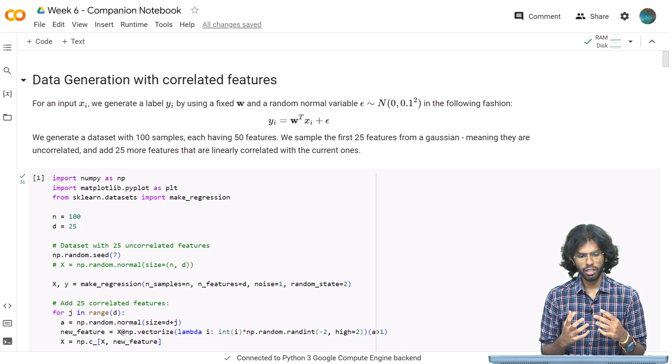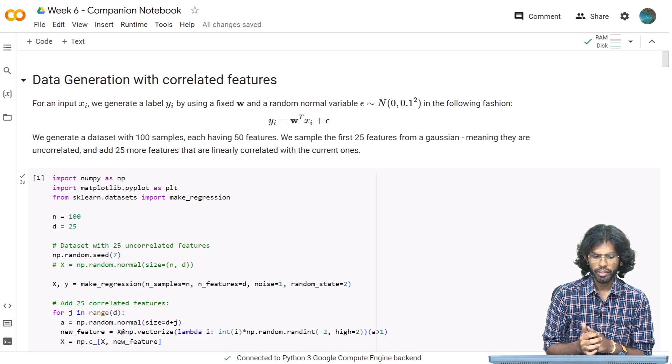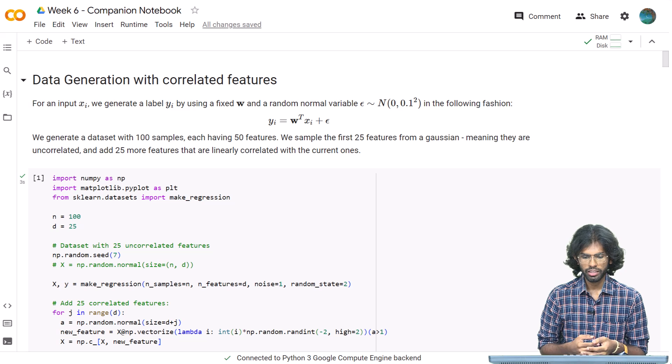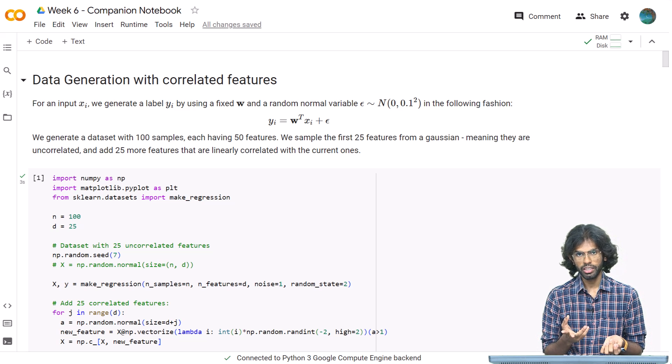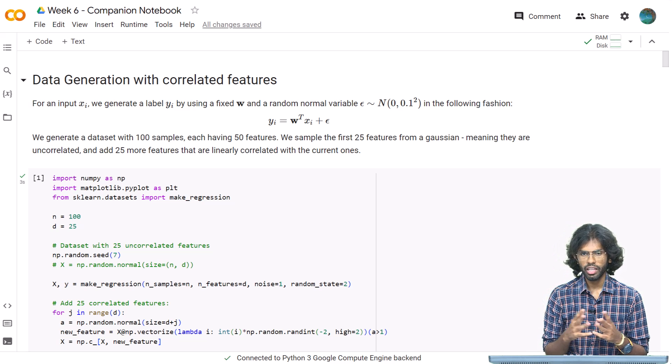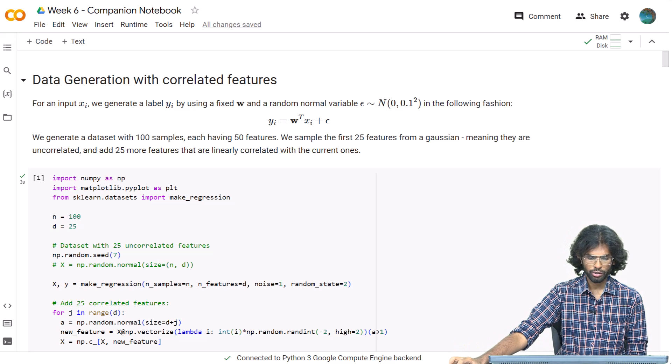To illustrate the effectiveness of ridge and lasso regression, we will generate a dataset with some correlated features. In this particular example, I am generating a 100-sample dataset, each having 50 features. The first 25 features are completely uncorrelated with each other, and the other 25 features have some linear correlation added to them.